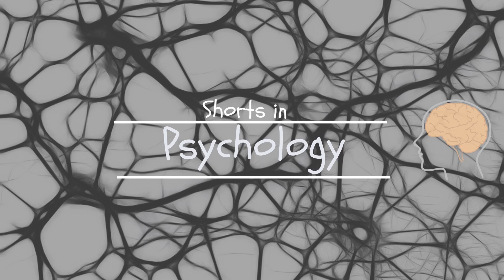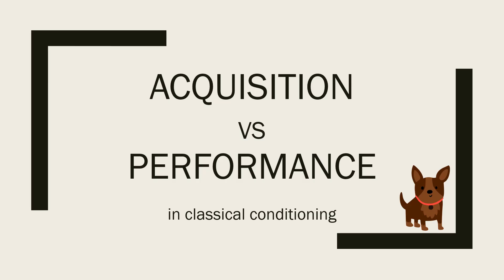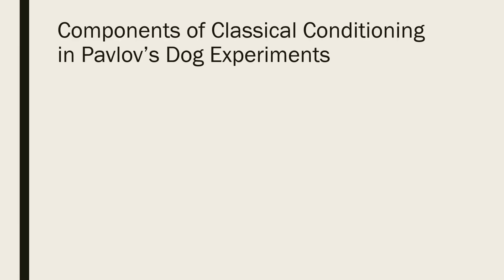Hello and welcome to Shorts in Psychology. Today's video is another one about classical conditioning and the difference between acquisition and performance in this type of learning. We're going to use Pavlov's dog experiments as the illustrative example to explain the difference between acquisition and performance in classical conditioning.